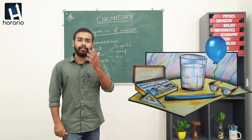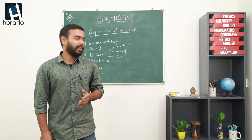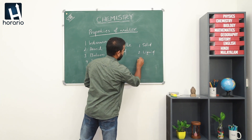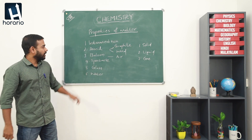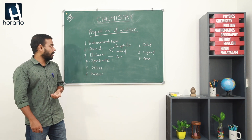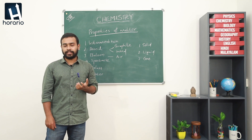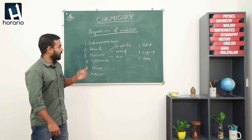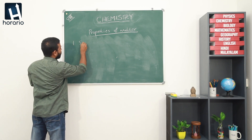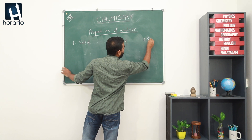I am sure you have learned about the three states of substances in your previous classes. They are solid, liquid and gas. We need to classify all these materials based on their physical state. All these diverse materials look different and behave differently. Why? Because they exist in different physical states. So let us classify them. The three states of substances are solid, liquid and gas.